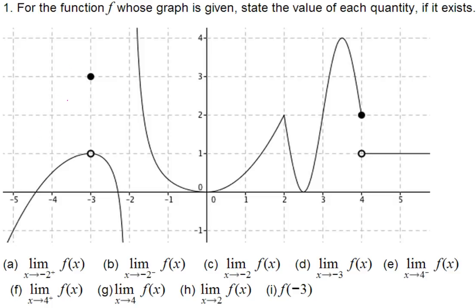In part a, we are trying to find the limit of the function when x approaches negative 2 from the right side. Negative 2 is here. x is not exactly equal to negative 2 but very close from the right side. When x approaches negative 2 from the right side, the function is increasing without bounds, so the answer is positive infinity.